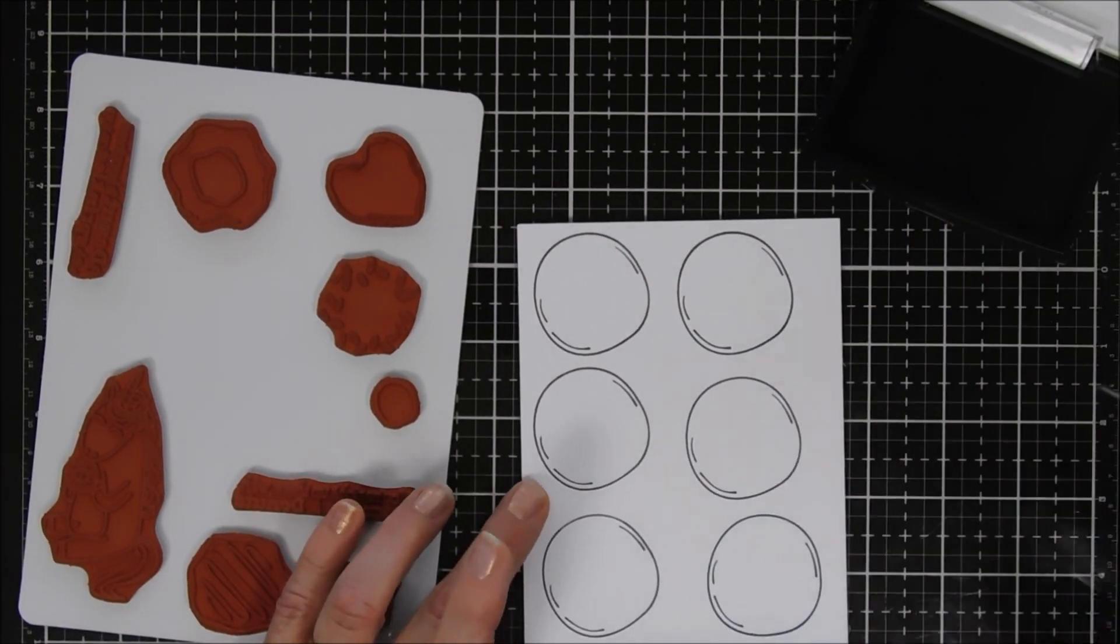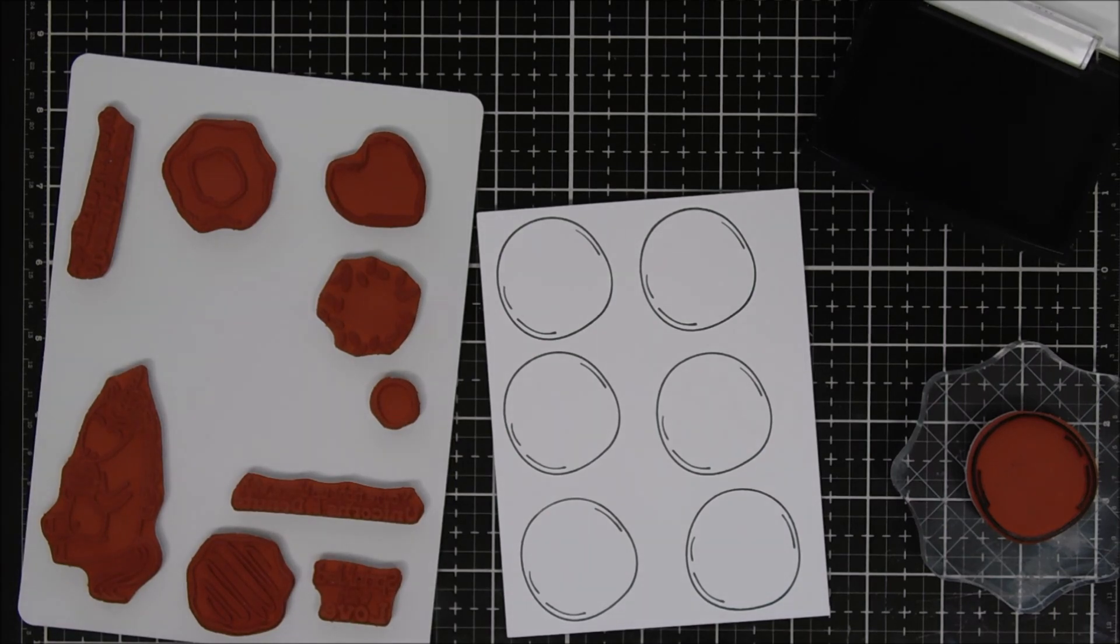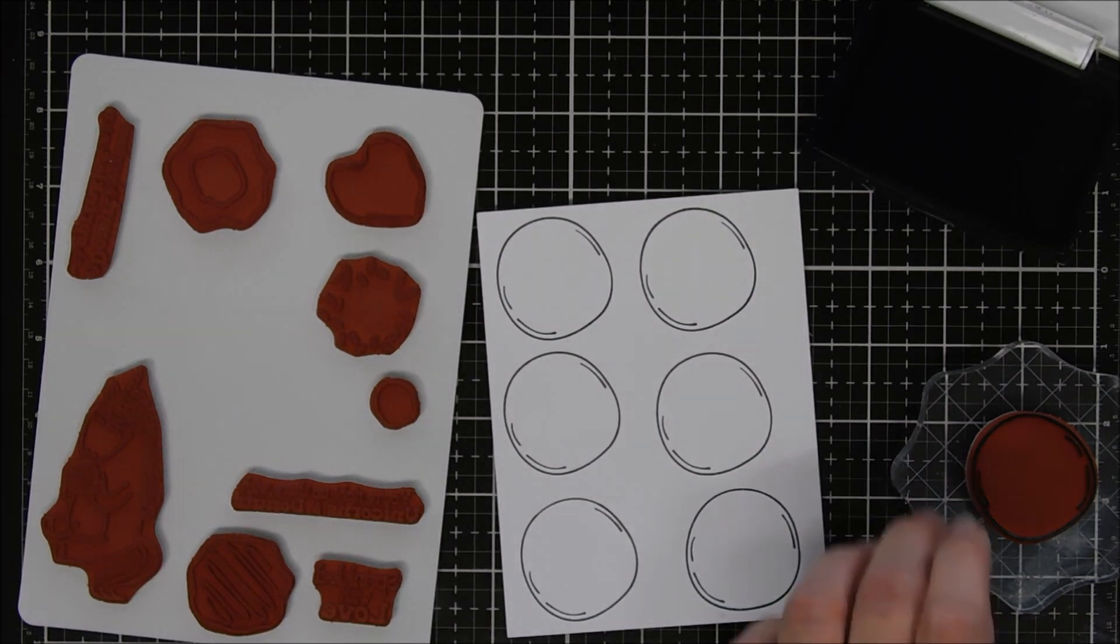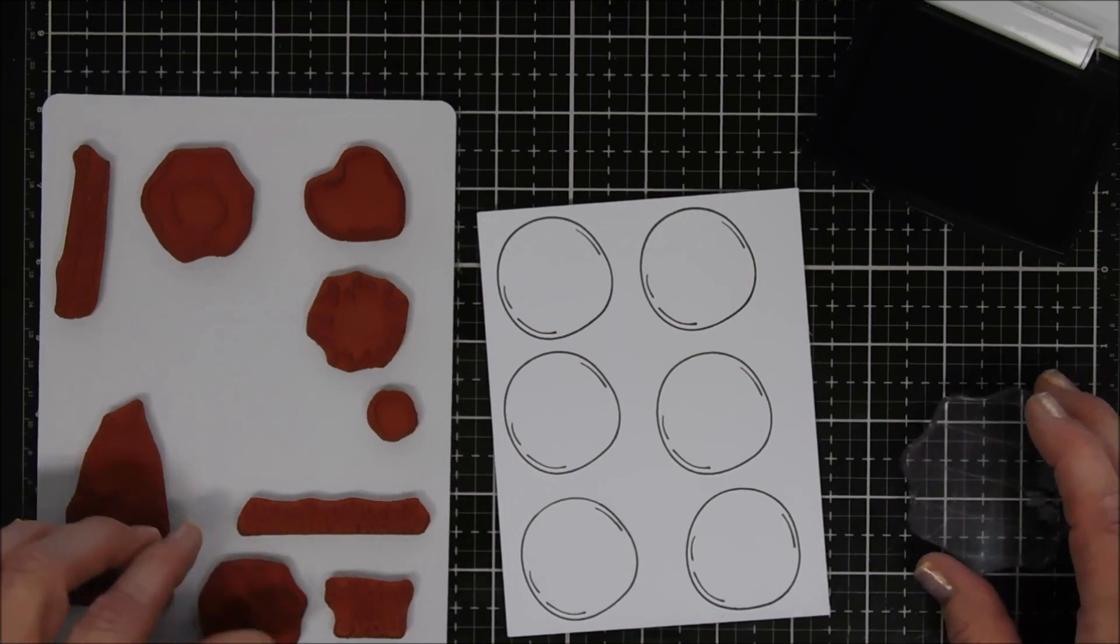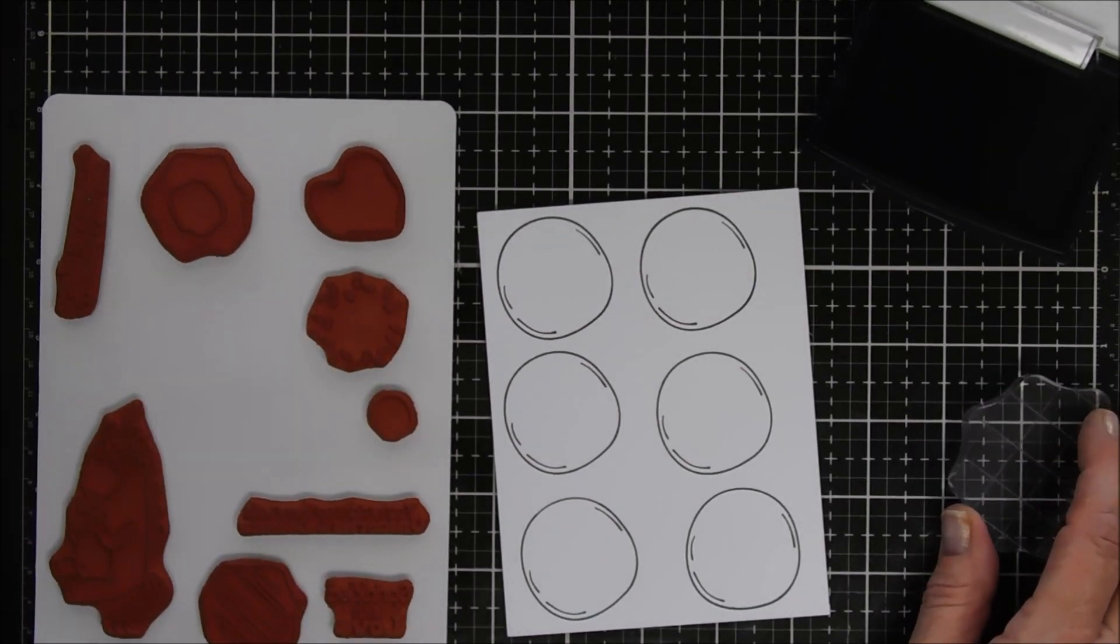I'm stamping the base of the donut six times. After we have the base done, I was going to stamp the donut hole but then I thought I didn't trust myself on getting it centered, so we're going to go ahead and stamp sprinkles.